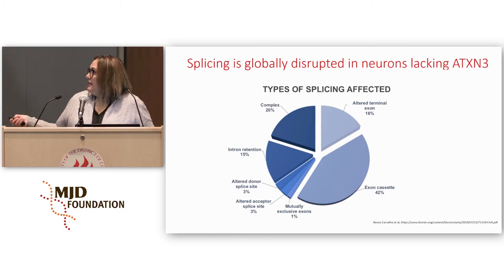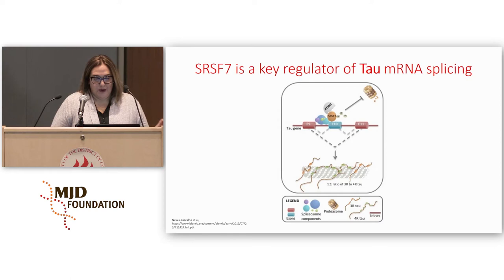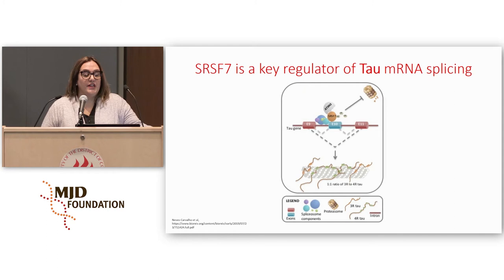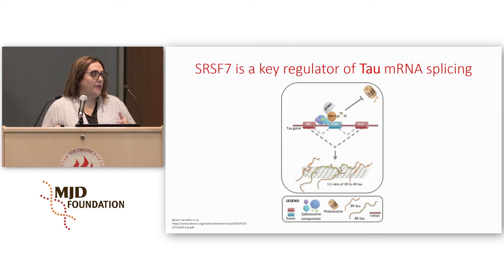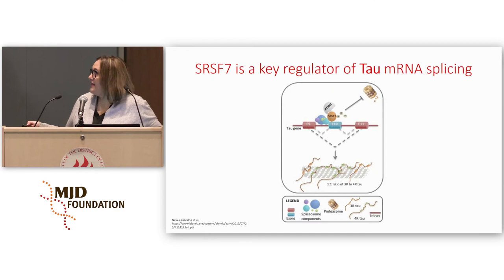The types of splicing changes — reflecting different ways of combining exons — are shown here. One splicing factor that called our attention was SRSF7, because it has been known to be a key regulator of mRNA splicing for tau, which is a protein relevant in several subtypes of neurological disease: Alzheimer's, frontotemporal dementia, and other neurodegenerative diseases. SRSF7 is involved in deciding whether exon 10 is kept in the tau mRNA, leading to two different proteins — with three or four repetitive regions — that have different functional properties in terms of promoting microtubule assembly and dynamics.